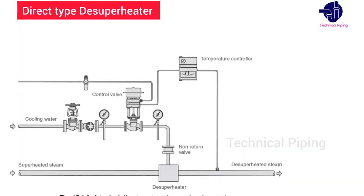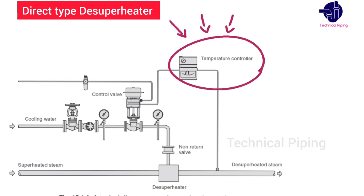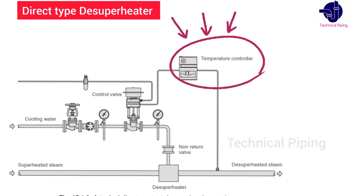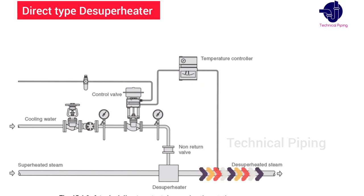The amount of water injected into the desuperheater is controlled by a valve, which is part of the temperature controller. The temperature controller reads the steam temperature downstream from the desuperheater to determine the valve position.